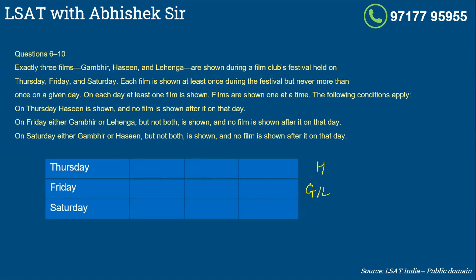so Gambhir or Lehenga, but not both. So basically one of these two movies has to be shown for sure on Friday, and no film is shown after it on that day. So once one of these two movies is shown - let's say Gambhir is shown on Friday in the first slot - we know for sure Lehenga will not be shown on Friday. Also, because Gambhir would be the first movie on Friday, you cannot show any other movie on Friday. Likewise for Saturday, either Gambhir or Haseen, but not both is shown, and no film is shown after it on that day.